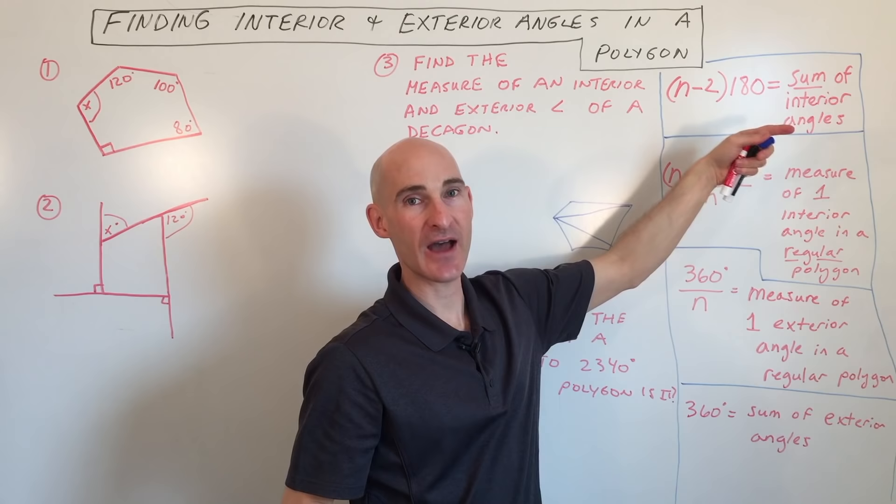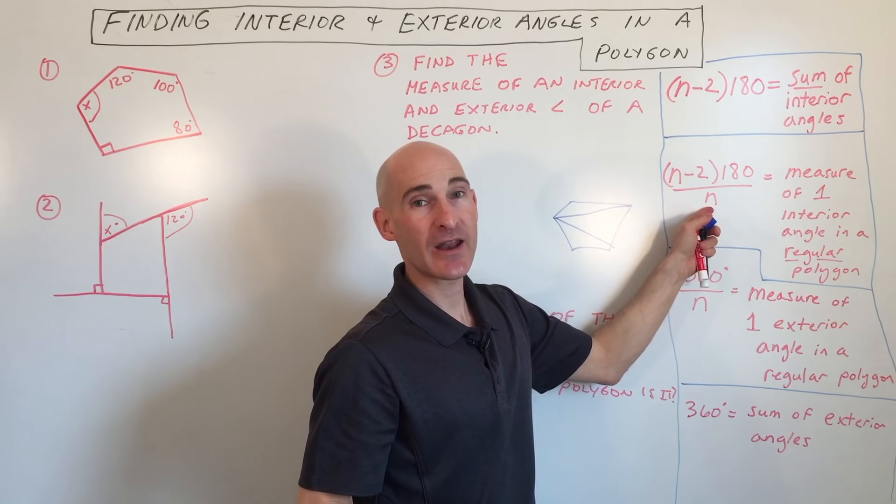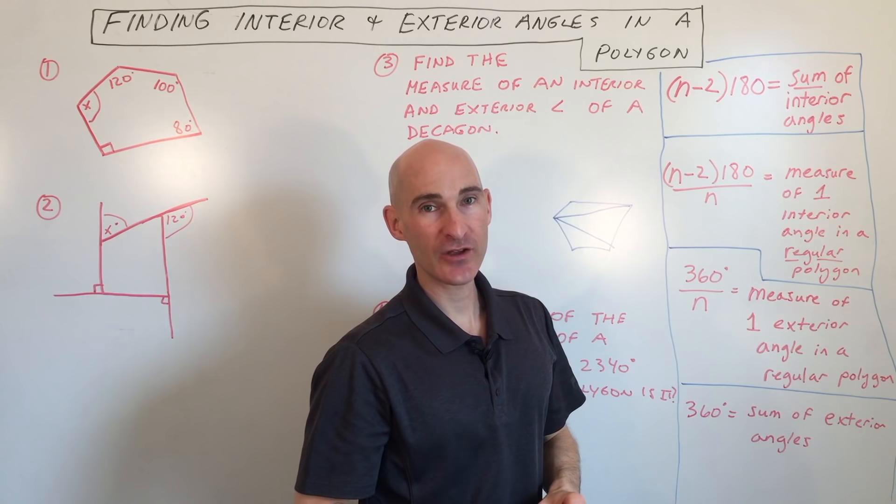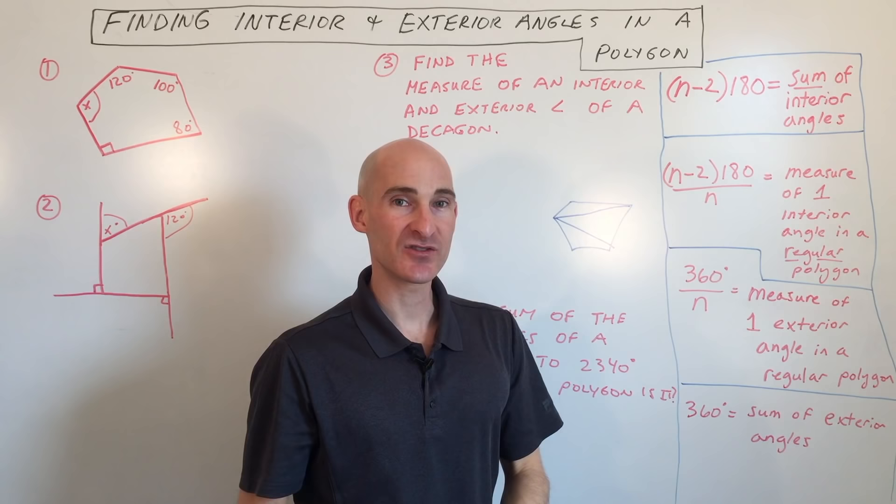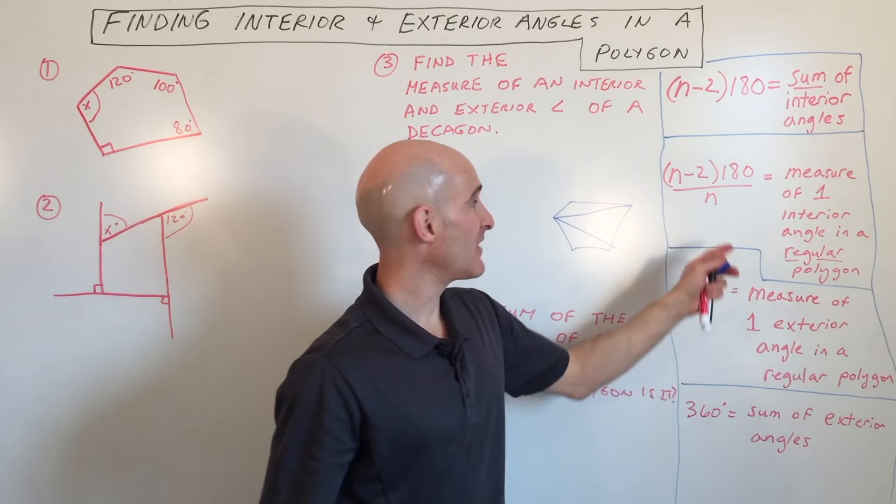Now this formula here, n minus two times 180 divided by n, we use this when you're trying to find the measure of one interior angle in a regular polygon. Regular means that all the angles are the same and all the sides are the same length. So when you find out the total measure of all the interior angles and you divide that by how many angles you have, that'll give you the measure of just one of those interior angles.